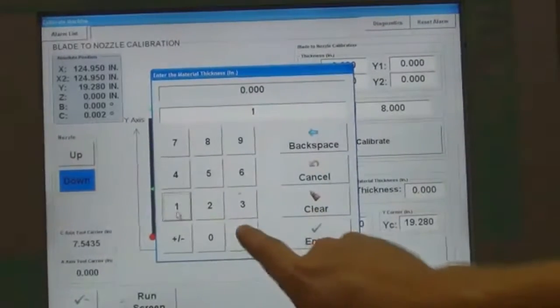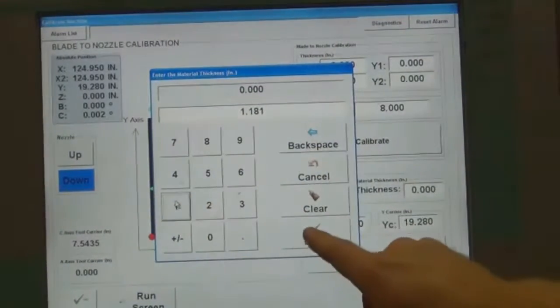Enter the material thickness in the Thickness Parameter display. Use a caliper to measure if necessary.